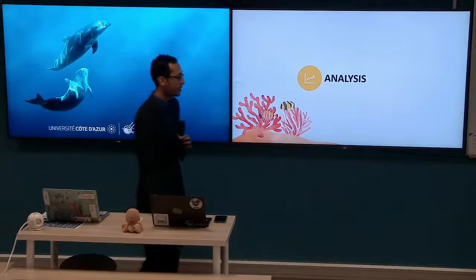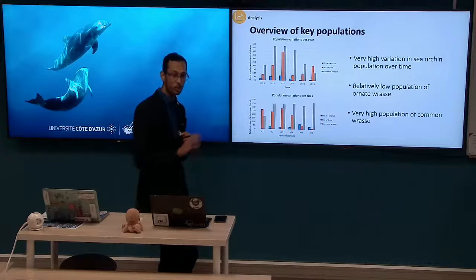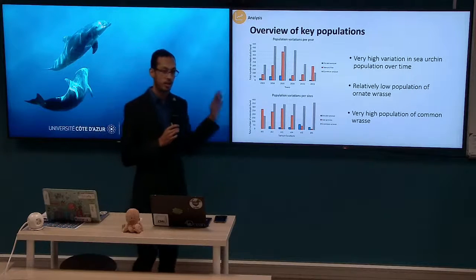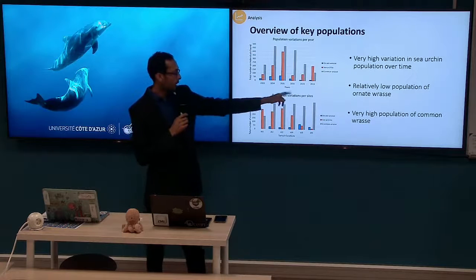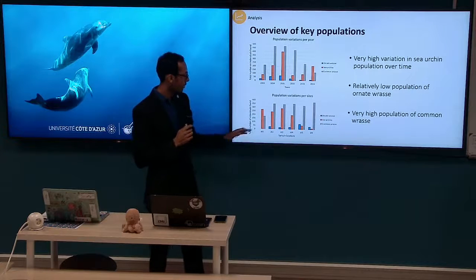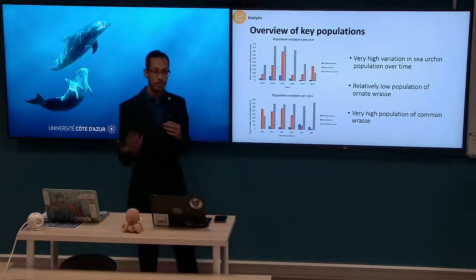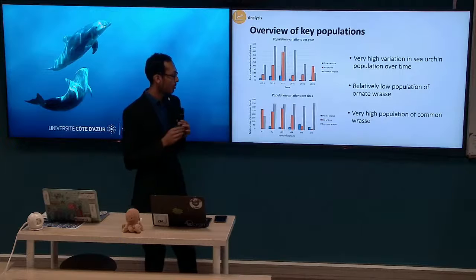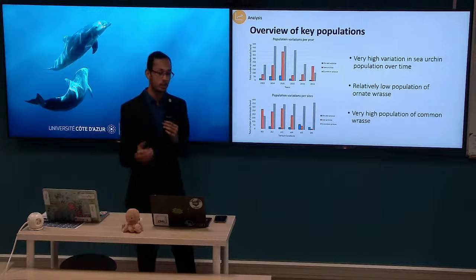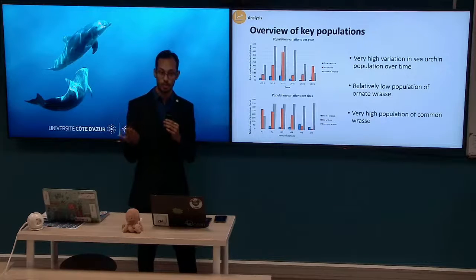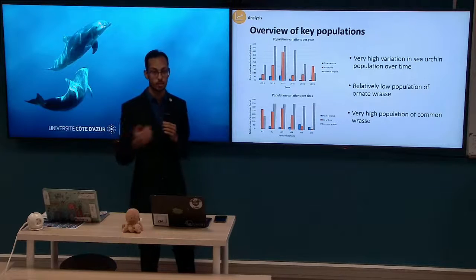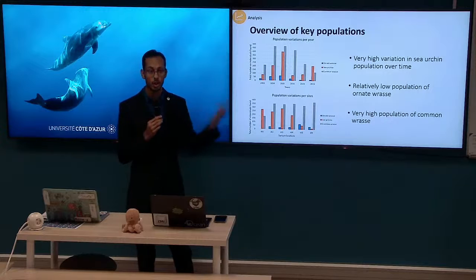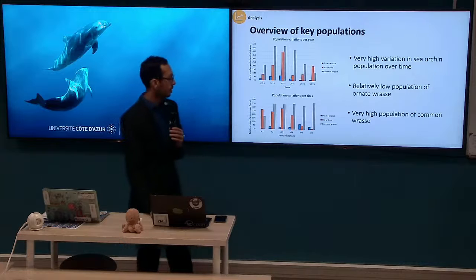Thank you, Elia, for going over the introduction and study design. Before analyzing our statistical tests, we need to understand the population dynamics of our key species: the Ornate Wrasse, Sea Urchins, and Common Wrasse. The first graph shows change over time; the second shows geographical change per SK station. A key observation is the high variation in sea urchin populations, a relatively low population of Ornate Wrasse, and a relatively high population of Common Wrasse. We are unsure why sea urchin populations vary so highly — it could be due to sampling time or other environmental and anthropogenic effects.